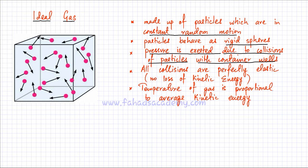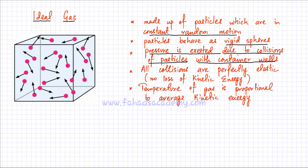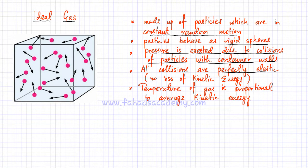Another thing about gases is that all collisions are perfectly elastic — there is no loss of kinetic energy. There's no energy being lost anywhere, so they have perfectly elastic collisions. And the temperature of a gas is proportional to the average kinetic energy of the gas.